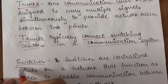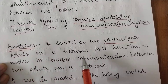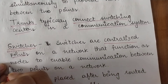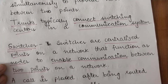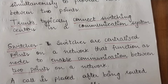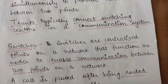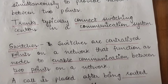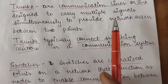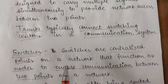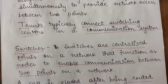Switches are centralized points on a network that function as nodes to enable communication between any two points. When a call is placed, it is basically routed through multiple switches. So trunks are the communication lines carrying the signals, and switches are the centralized nodes on a network that enable communication between any two points.